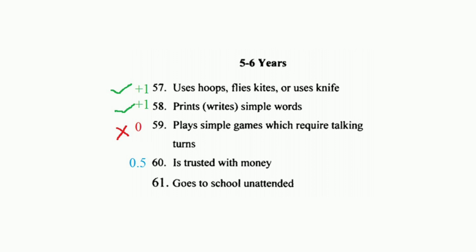For example, you can see here: item 57 — the child is able to perform this task, so the statement is ticked and given plus one. Likewise, item 58 is given plus one as the participant can perform that task. For item 59, the participant cannot perform, so the statement is marked with a cross and given a score of zero. For item 60, a score of 0.5 has been given because the participant can perform this task sometimes, not always.